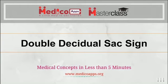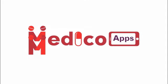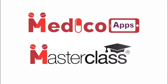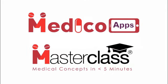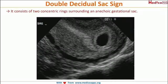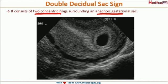In this MedicoApps Masterclass, let's learn about double decidual sac sign. When we talk about double decidual sac sign, it consists of two concentric rings surrounding an anechoic gestational sac.